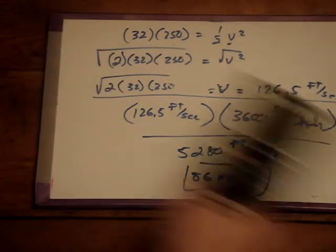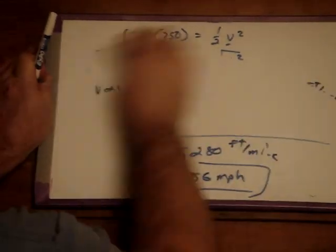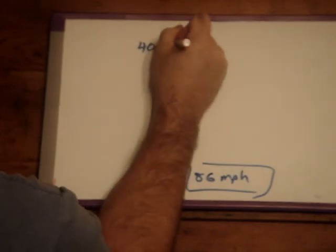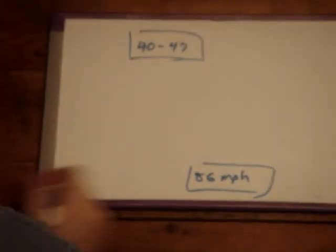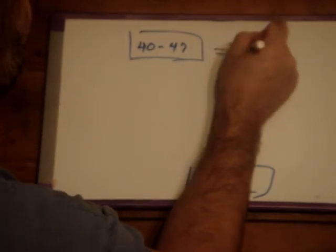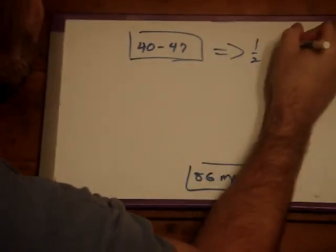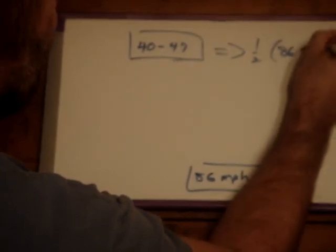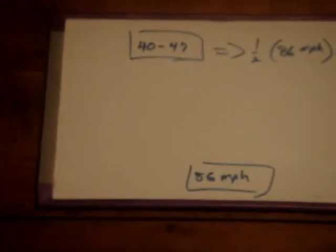And I think that I've never actually heard of somebody hitting 86 miles an hour, especially down a little hill that's only 250 feet high. Typically, I'll reach from 40 to 47 or 48 miles an hour, which is roughly half of this 86 miles an hour that I should be getting back.